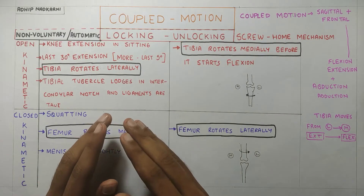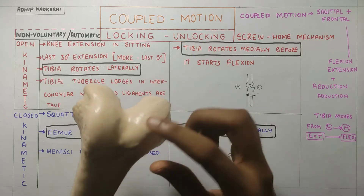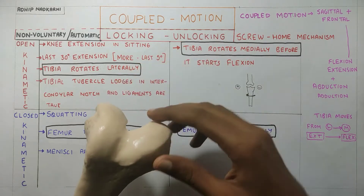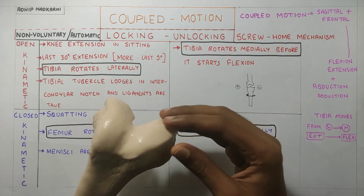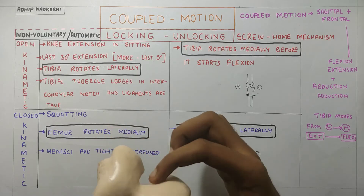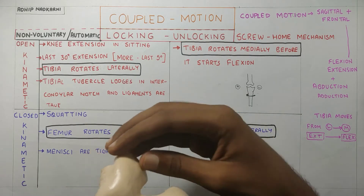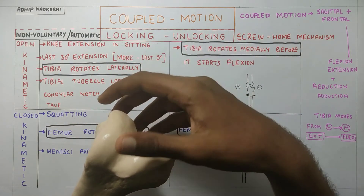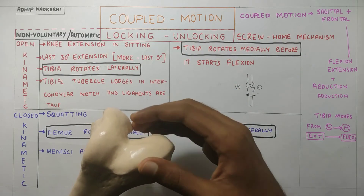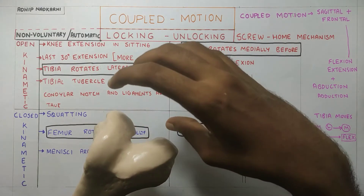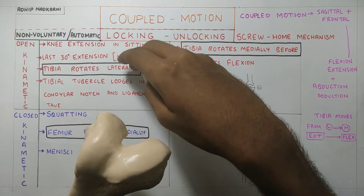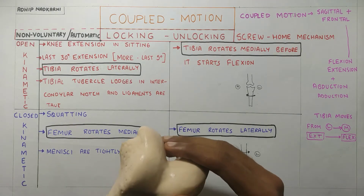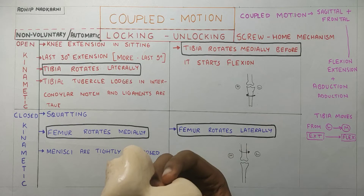Going to the why of locking and unlocking of the knee joint. The femur has a medial condyle with a bigger articulating surface compared to the lateral condyle. When the knee goes into extension, the articular surface on the medial side is much more than the lateral side. As it approaches full extension, the lateral articular surface is already completed whereas on the medial side there is still some space. To compensate this, the tibia rotates laterally in open kinematic chain, whereas the femur rotates medially in closed kinematic chain, to compensate this extra articular surface.